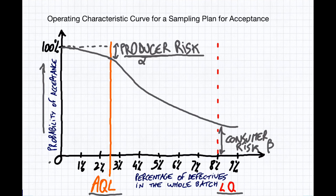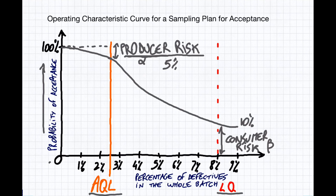The beta risk — the risk of accepting something that is not good. As you can see, this is set at 5% AQL and 10% consumer risk. This is actually written in the standard. A lot of people don't know about that, but that's the way it's set up.